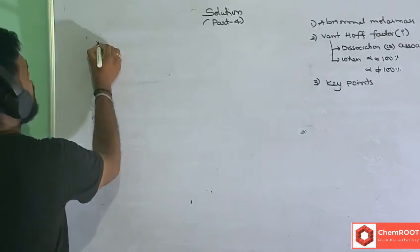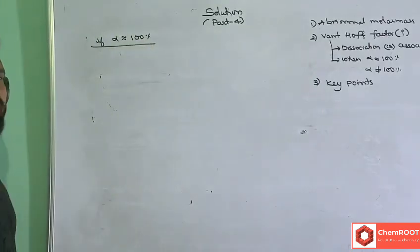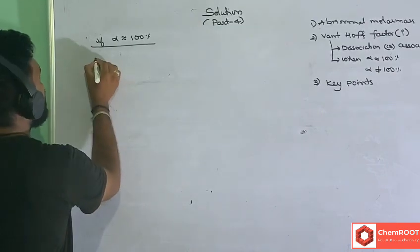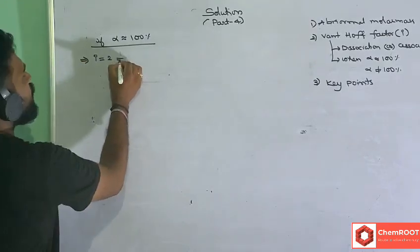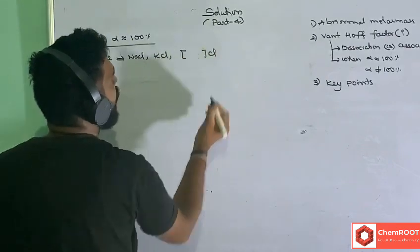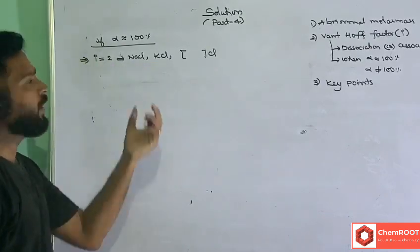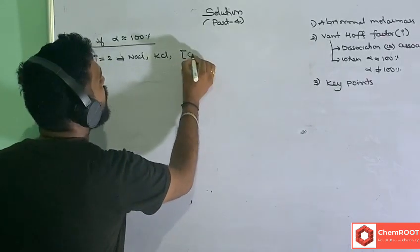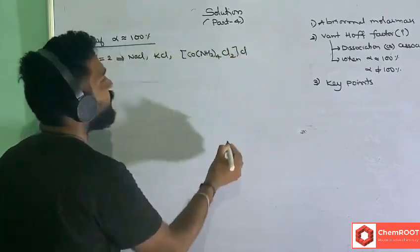Now, if it is 100% dissociation (alpha = 100%), then i = 2 for NaCl, KCl, or any complex with one counter ion, because 2 ions are given after dissociation. For example, cobalt complexes like [Co(NH₃)₄Cl₂]Cl.